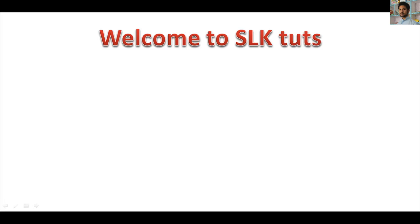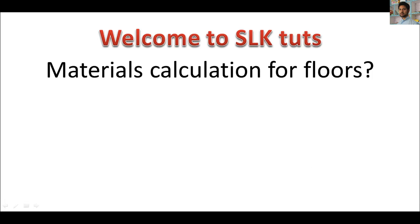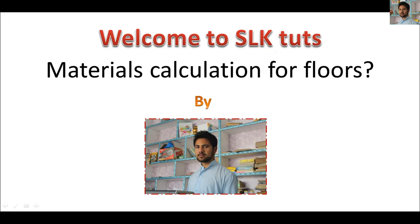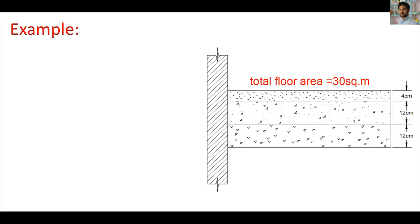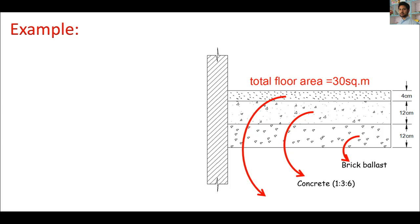Assalamu alaikum YouTubers, welcome back to SLK Tools. In this section we'll be talking about floors as a quantity survey — how you can find materials just for floors. We'll start with a few examples. In the first example, the total floor area is 30 square meters. The section is given with the base as a brick base, 12 centimeter thickness. The concrete ratio is also given, and the topping is given as 1:3 cement with stone chips, with a thickness of 4 centimeters.